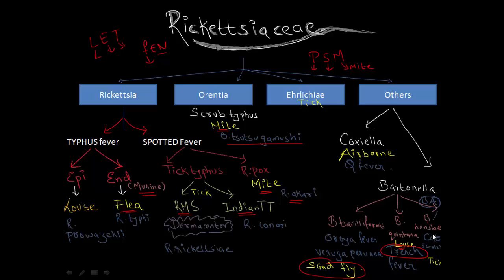Bartonella henselae is notable as it causes bacillary angiomatosis in AIDS patients and also causes cat scratch disease. This is transmitted by a cat flea. So here is the complete classification of Rickettsia. Thanks for watching.